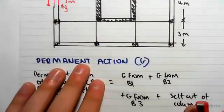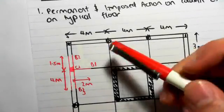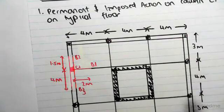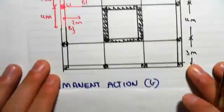Plus the self-weight of the column. So we've got going into this column B1, B2, B3, and the actual column itself adds to the self-weight.